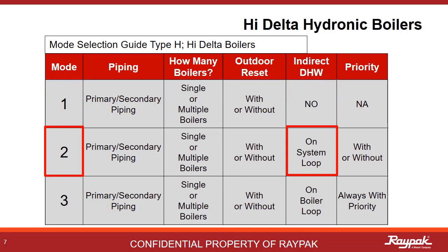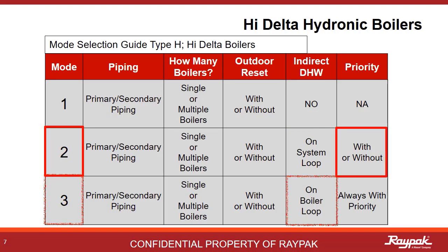If there is an indirect system present on the system loop, then it is Mode 2. If the indirect is present on the boiler loop, then it is Mode 3. Mode 2 can be run with or without priority, while Mode 3 is always with priority.